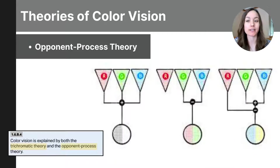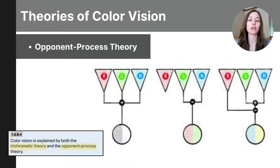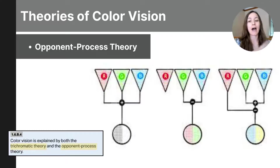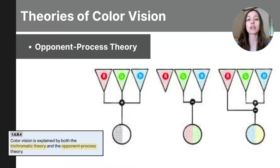The next theory is the opponent process theory. These two theories are not in opposition — they work together to explain how we detect and perceive color. The trichromatic theory came first, accounting for our initial detection of color based on the activity of three cones in the retina. The opponent process theory explains how that information is processed and perceived after it's been detected. To define it: the cones detect color, and then their signals are processed in pairs of opposing color channels — red versus green, blue versus yellow, and black versus white. This occurs in the ganglion cells of the retina and the brain's visual pathways, and the signals from the cones are combined in a way that creates opposing color responses.